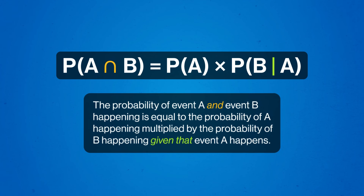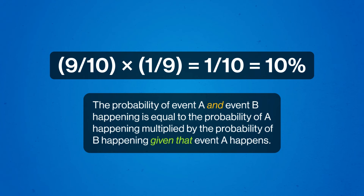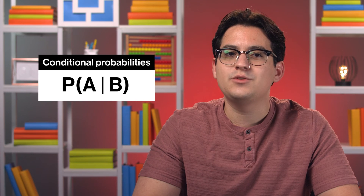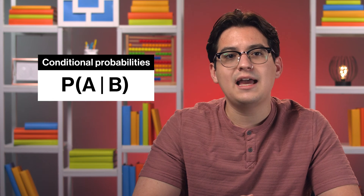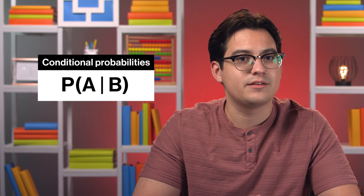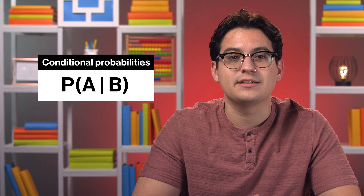We still multiply probabilities, but for dependent events, the probability itself changes depending on which branches of the tree we're exploring. Following this process in general gives us a way of finding the probability of two events happening when one event depends on the other. So to sum up, the probability of someone else getting assigned to the fryer and Melissa getting assigned floors is 10%. These probabilities with 'given that' statements lie at the heart of dependence and independence, and are called conditional probabilities.